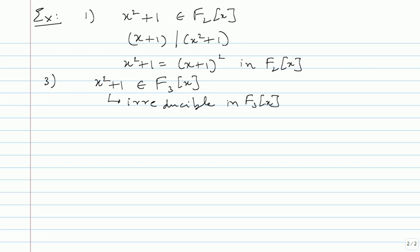A polynomial with no factors is called irreducible. There is some distinction between irreducible and prime in theory, but we will just say irreducible. We can think of irreducible polynomials as analogous to prime numbers — this is a prime in that sense.